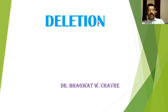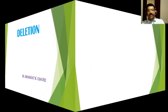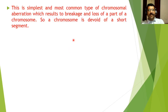Hello everyone, welcome to the course on genetics. In this video we will learn about deletion, which is the first and most important type of chromosomal aberration. Chromosomal aberrations can be caused due to four different types of phenomena: first is deletion, second is duplication, third is inversion, and fourth is translocation. In this video we will learn about the first, that is deletion.